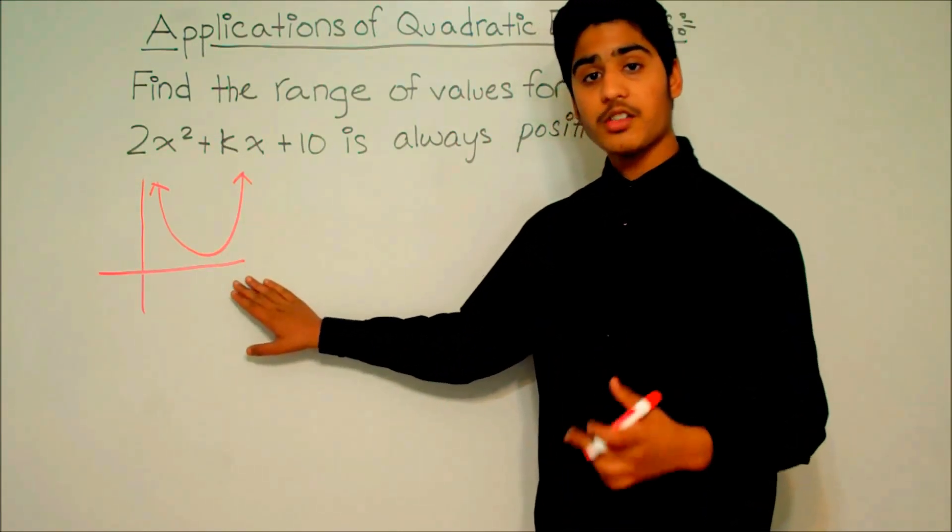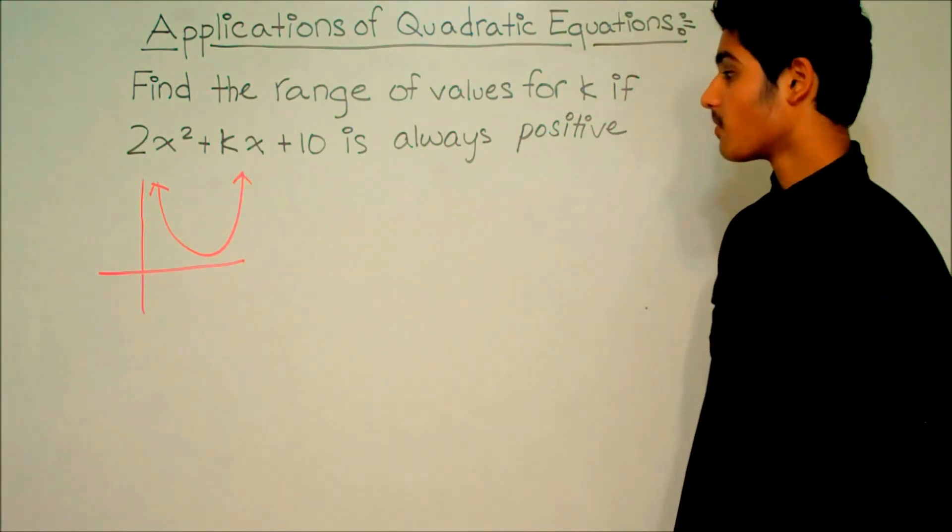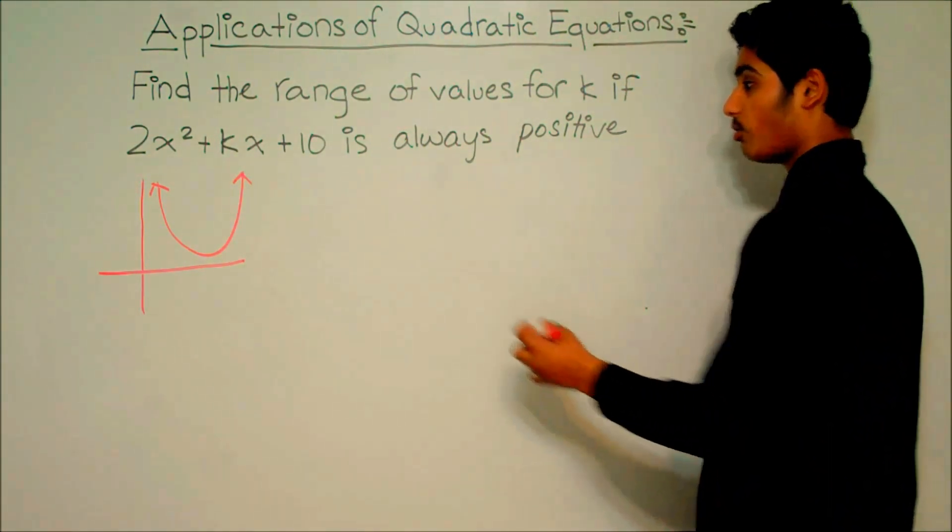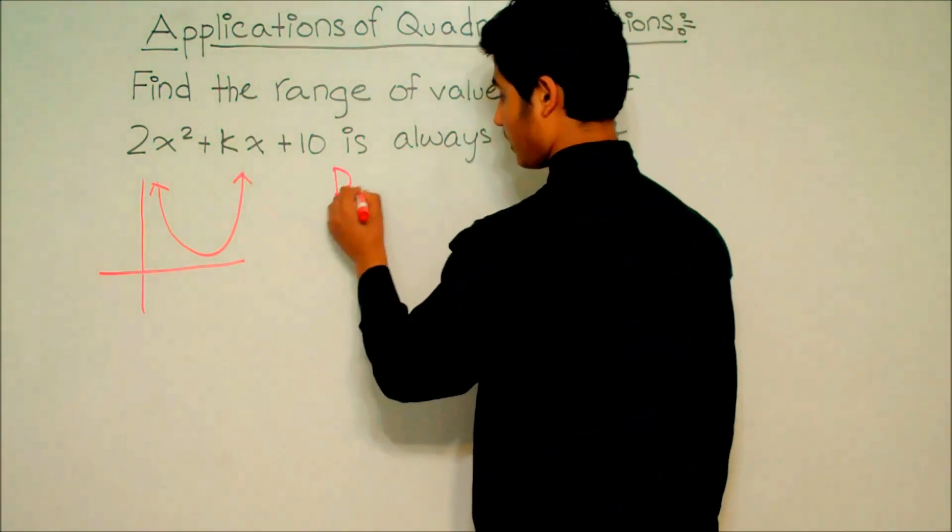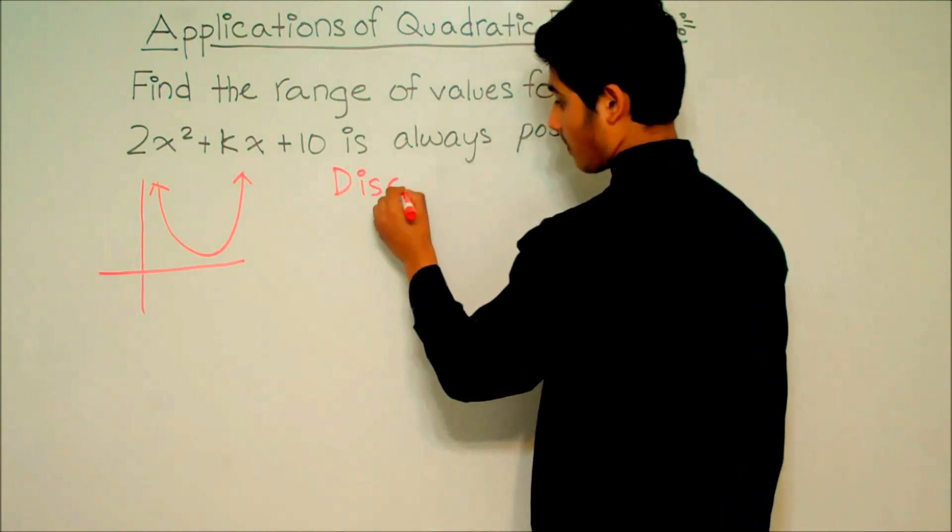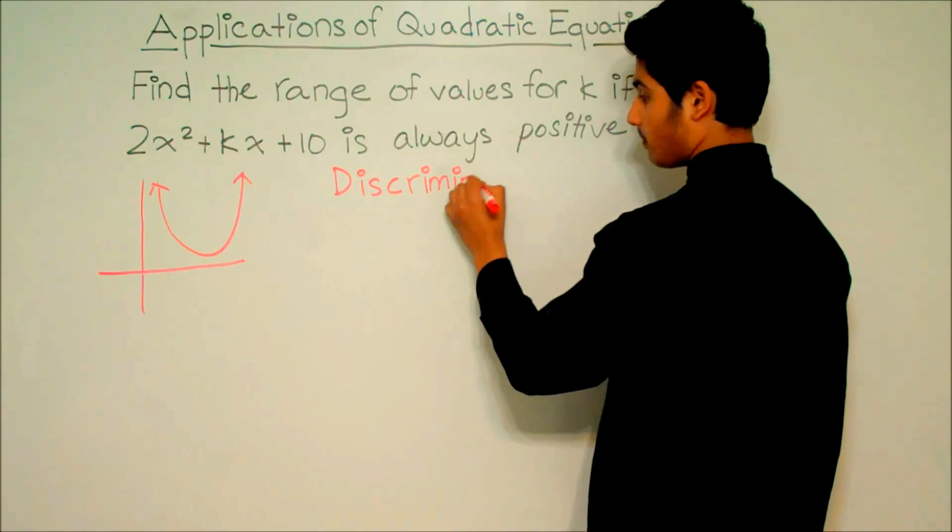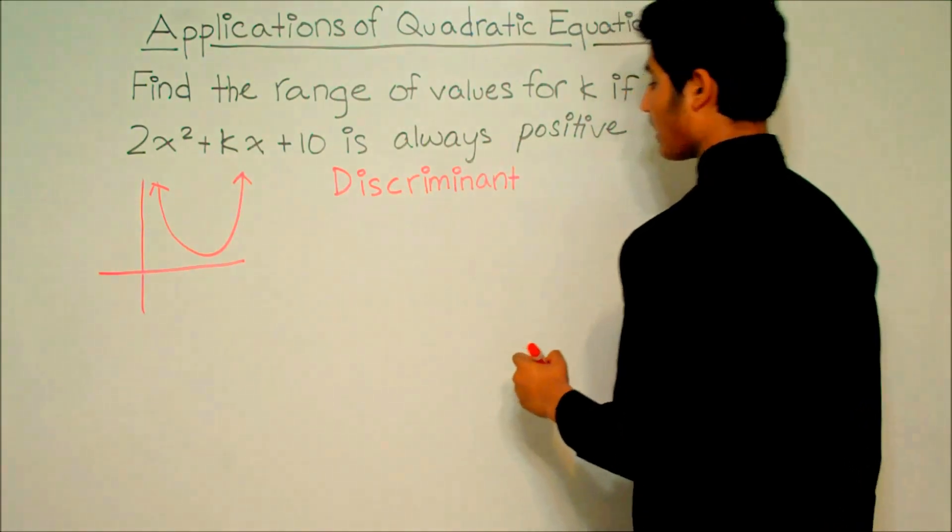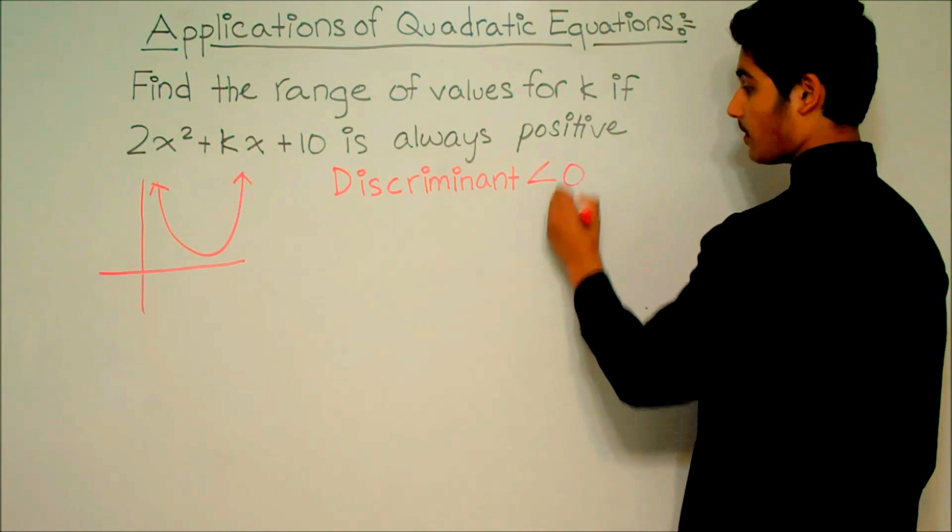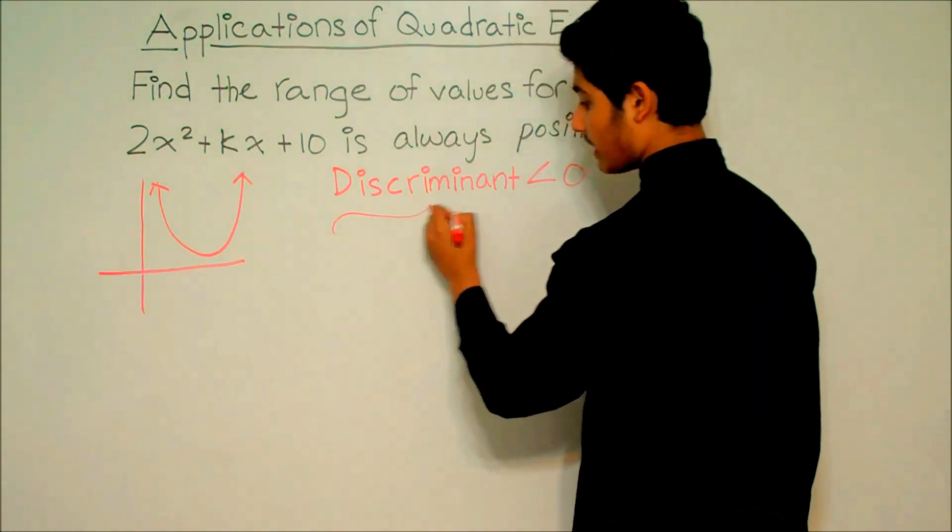When we look at this graph, we can also see that there are no roots. And we know that when there are no roots, that means the discriminant is less than 0.